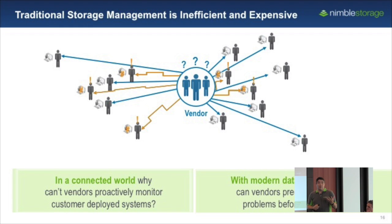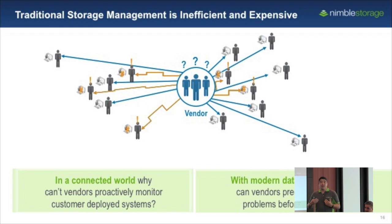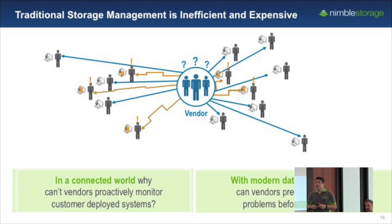Every single piece of infrastructure in the data center today pretty much sends some form of telemetry home or has some communication with the vendor. So the question is, why can't we do a lot more than this? Why can't we use that information that the arrays are sending and do a lot more than just break-fix and tell me when the drives fail? Why can't we be a lot more predictive with this?